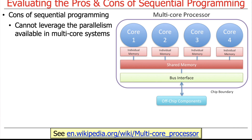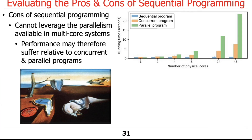Of course, there are downsides to sequential programming. The most obvious one nowadays is that it doesn't leverage all the parallelism available in modern multi-core systems. Modern hardware environments are really designed for multi-core execution. With concurrent or parallel software, you can take advantage of all those cores, but with sequential programs you're typically limited to just one thread of control.